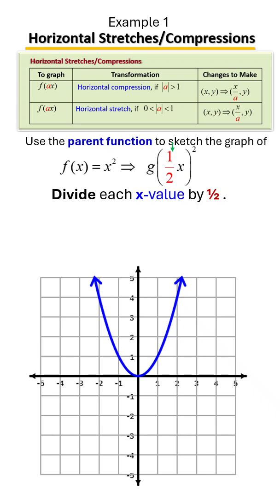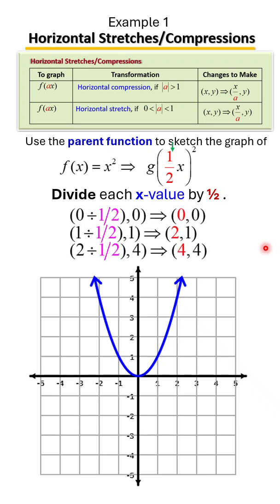So that'll be 0 divided by 1/2, which is 0; 1 divided by 1/2 is 2; 2 divided by 1/2 is 4. Then we're going to plot those points, and it's going to look like so.